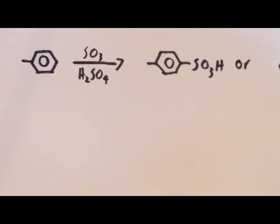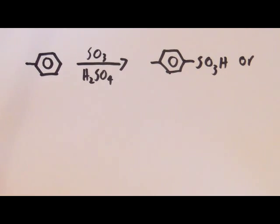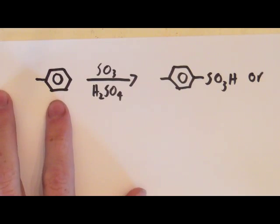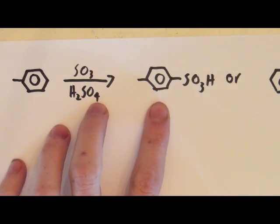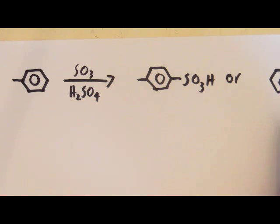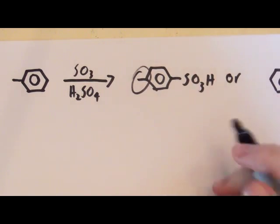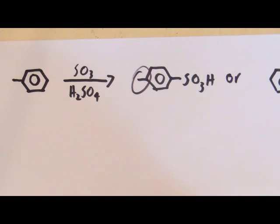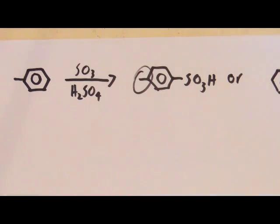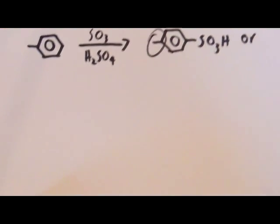I will now attempt to explain the mechanism behind the sulfonation of toluene. So toluene, when it's sulfonated, can go into para-toluene sulfonic acid or ortho-toluene sulfonic acid. And that's because the methyl on the toluene is an ortho- or para-activating group. Now the actual mechanism is as follows.